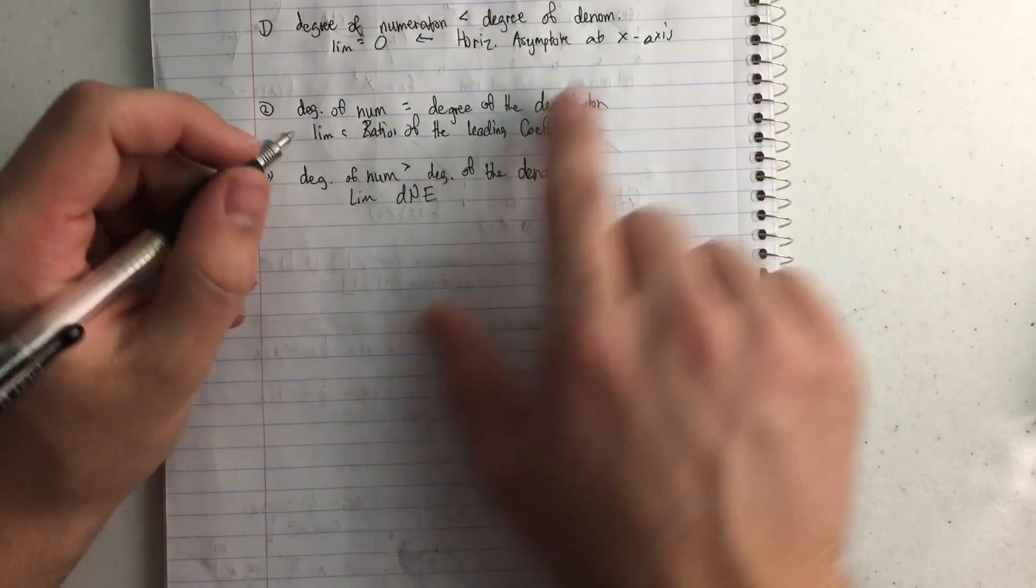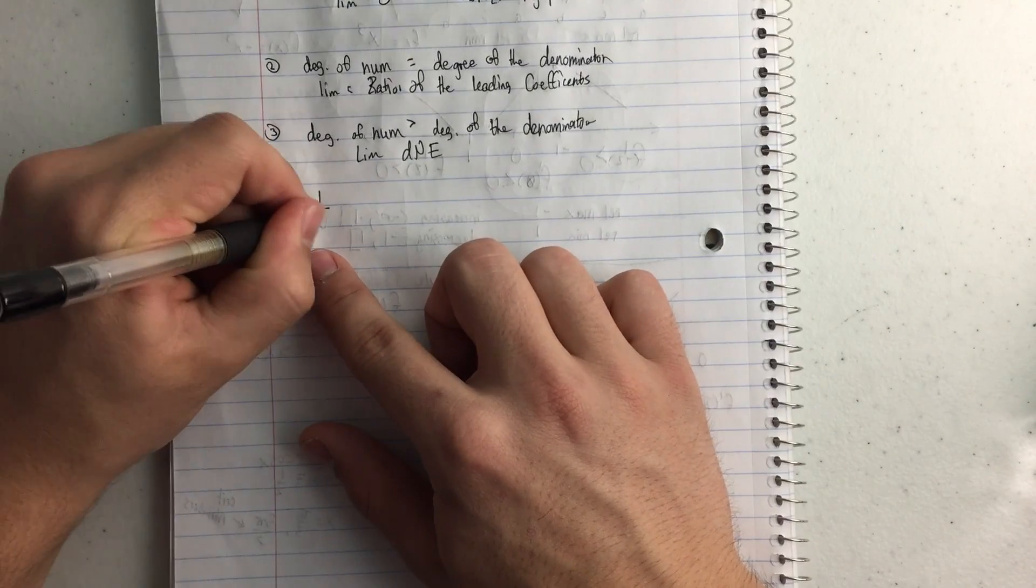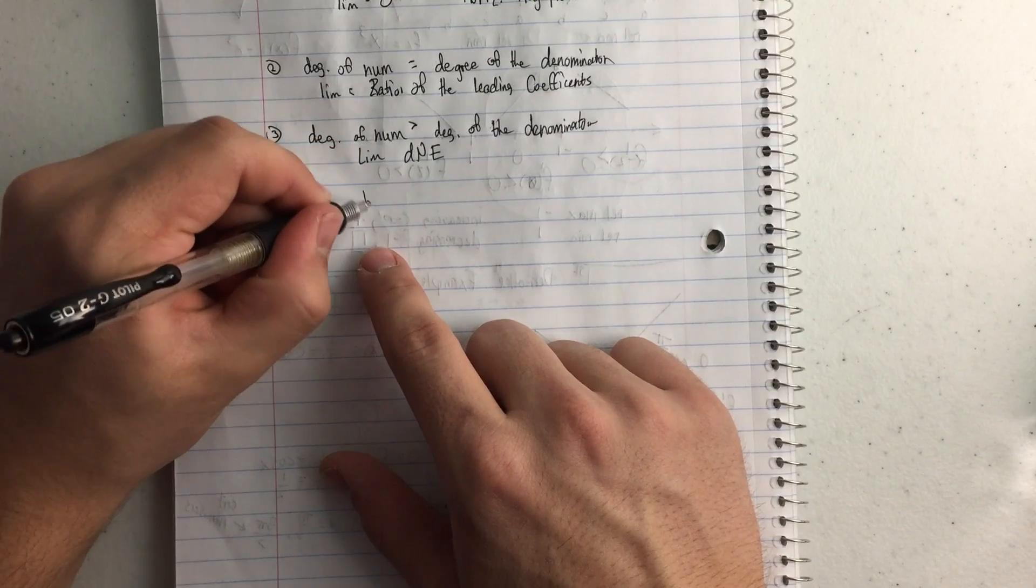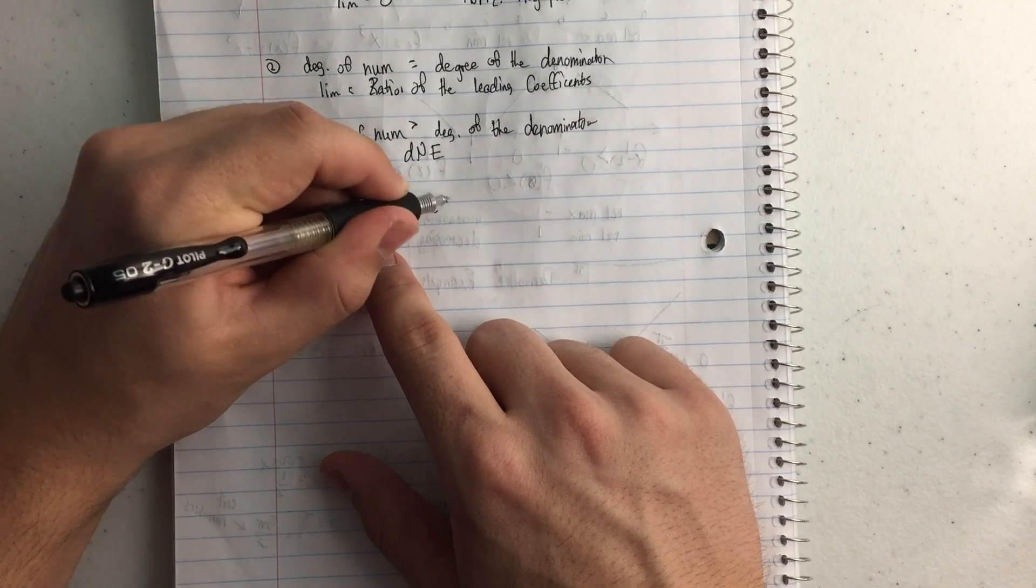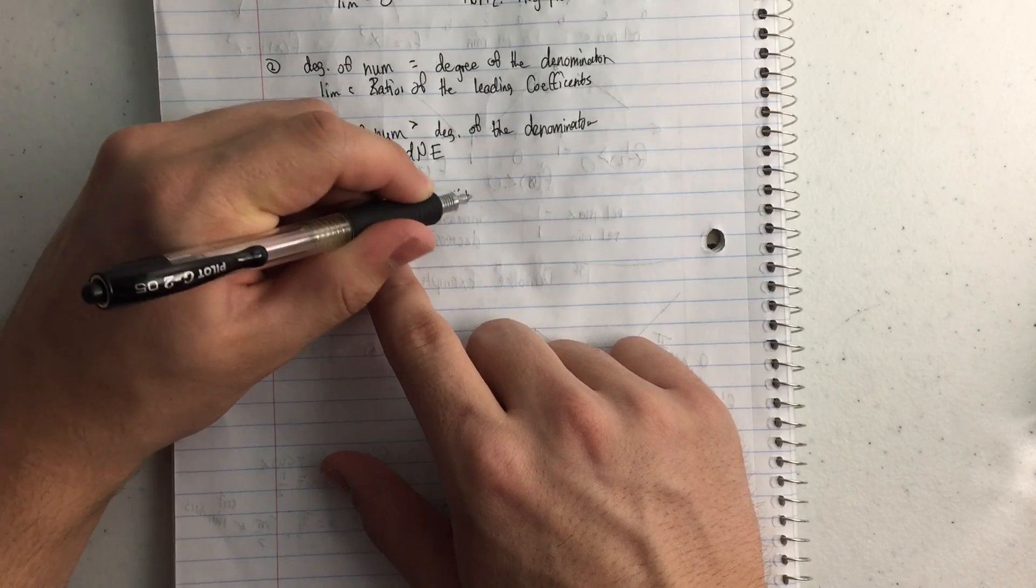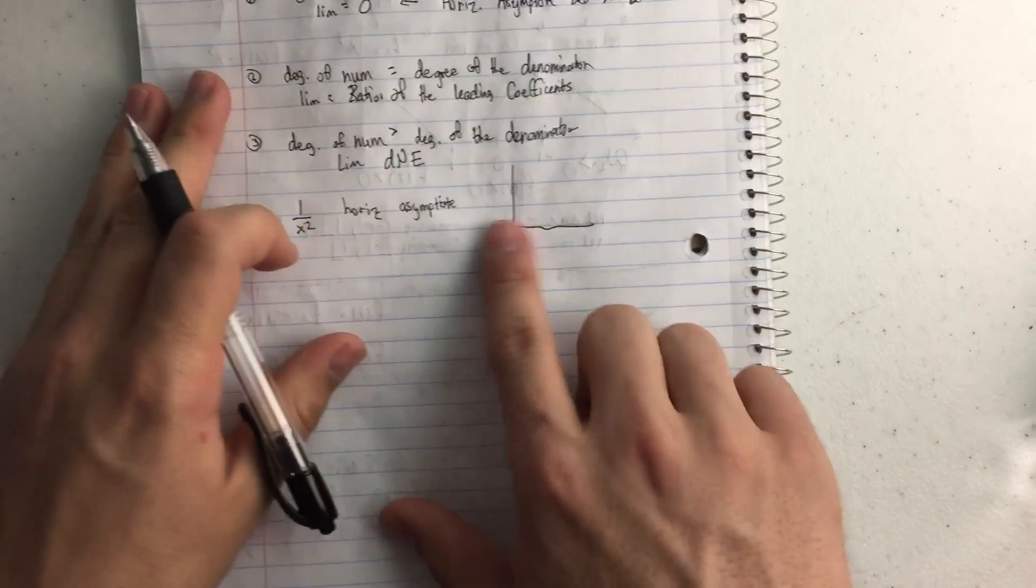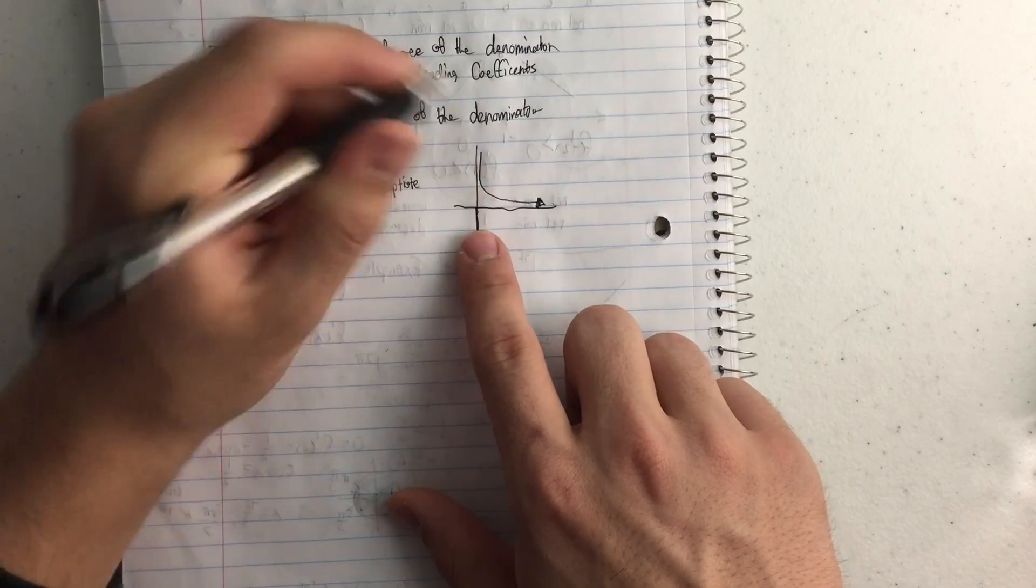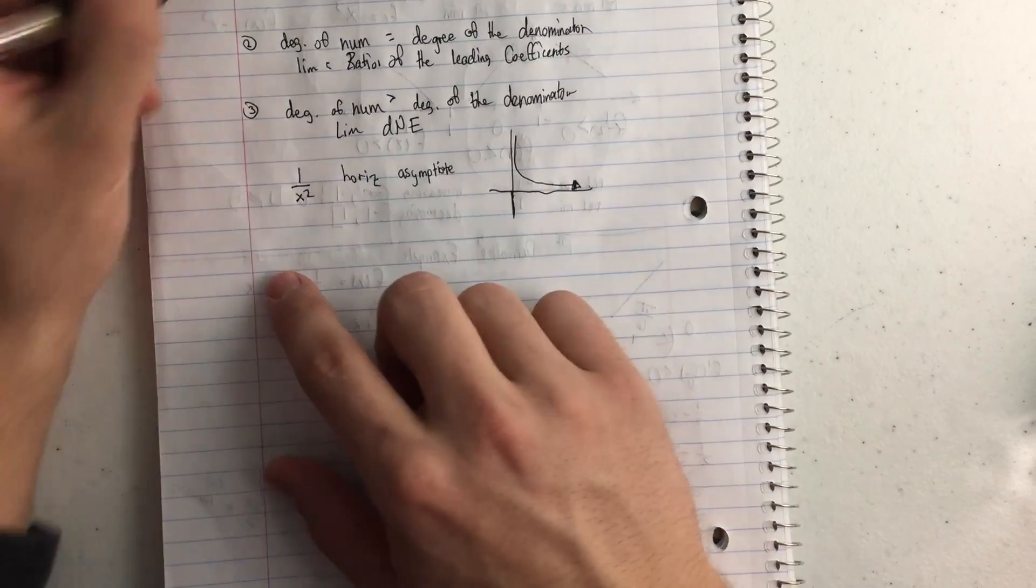So first one, if the degree of the numerator is less than the degree of the denominator, that's going to look like one over x squared. So it's going to have a horizontal asymptote at zero. So on a graph, it's going to be at my y-axis, so it might look like that. And that's it. So it's getting closer and closer to the x-axis, but it's not going to touch. That's rule number one.